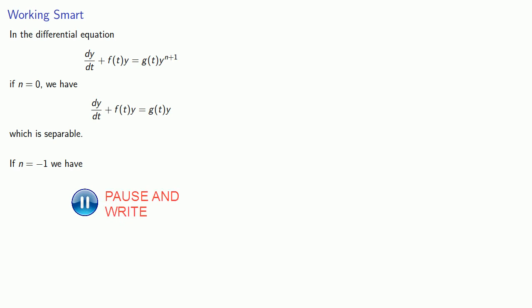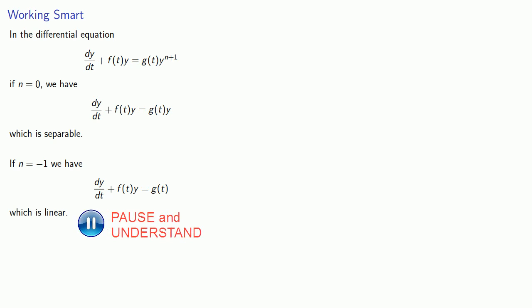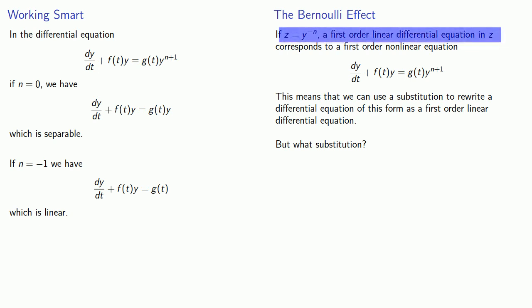If n is equal to negative 1, we have dy/dt plus f(t)y equals g(t). And while this might or might not be separable depending on what f of t and g of t are, this is a linear differential equation. And remember, the main effect of our transformation will be to make a linear differential equation, so if we're starting with one, we probably wouldn't want to bother with the transformation. So we'll assume that n is not equal to 0 or negative 1.